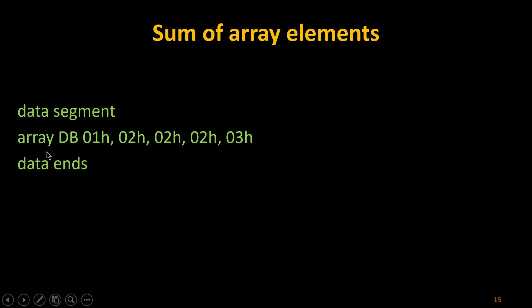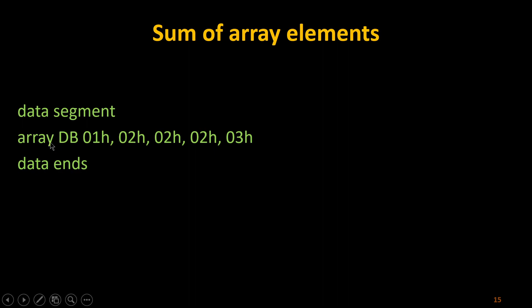I am declaring an array of five individual values in sequence. I am specifying this as DB — data byte — which means it is going to handle 8-bit operations or 8-bit values. If it were DW — data word — it would handle 16-bit elements. I have created an array with the name 'array' and used DB to specify 8-bit data. After the array ends, I end the data segment.